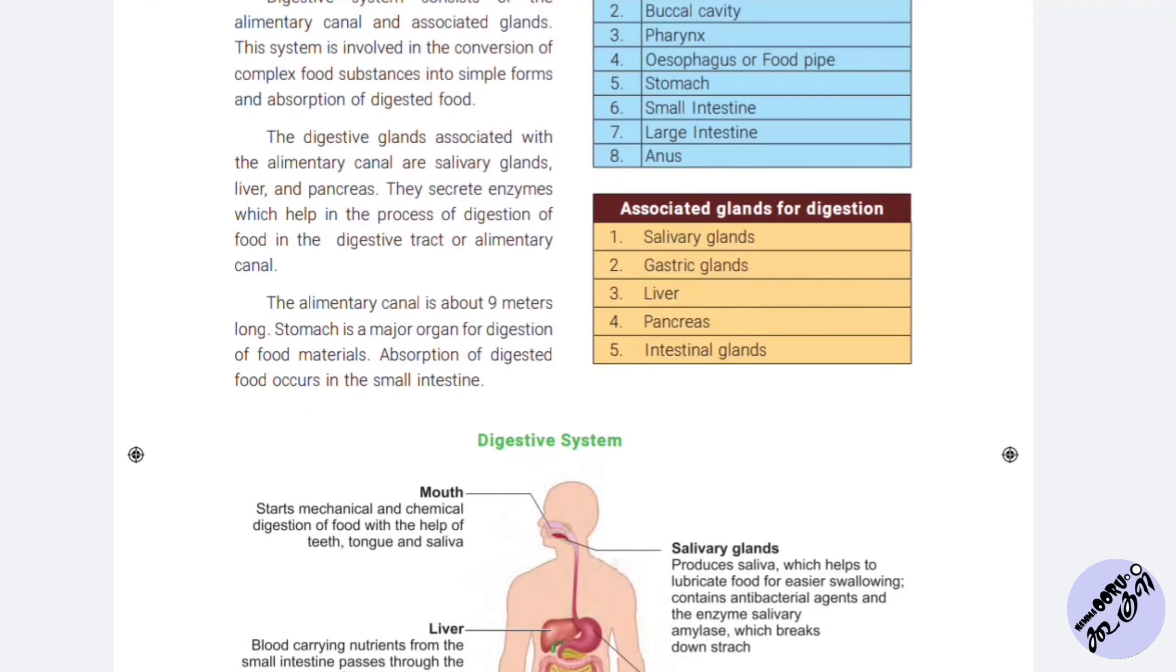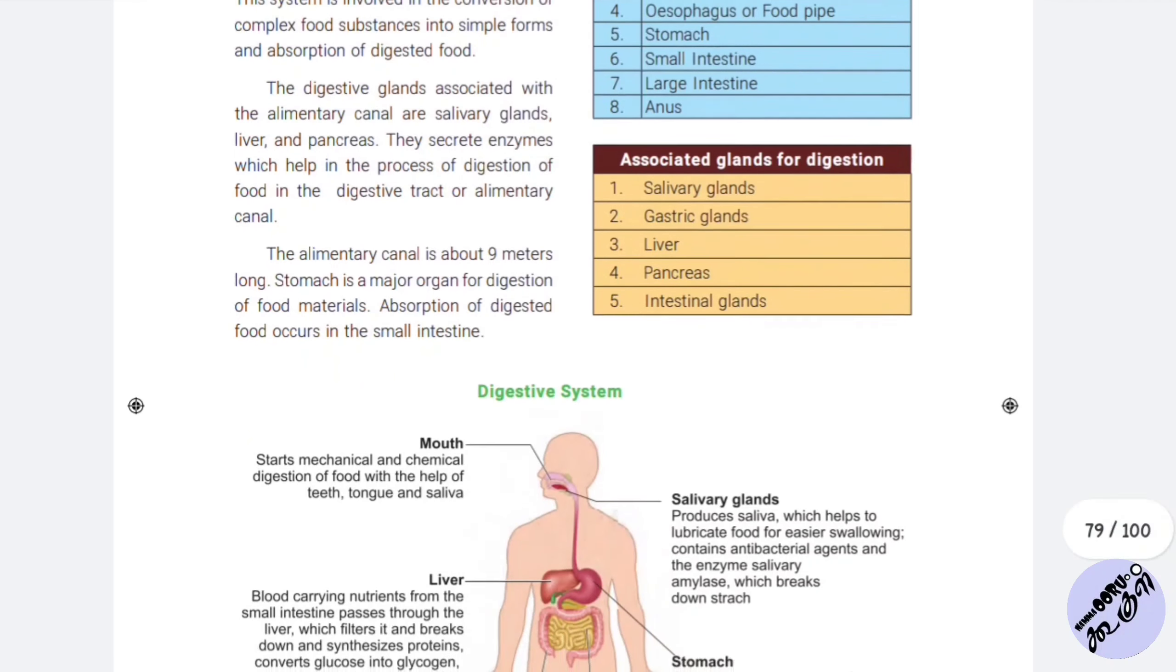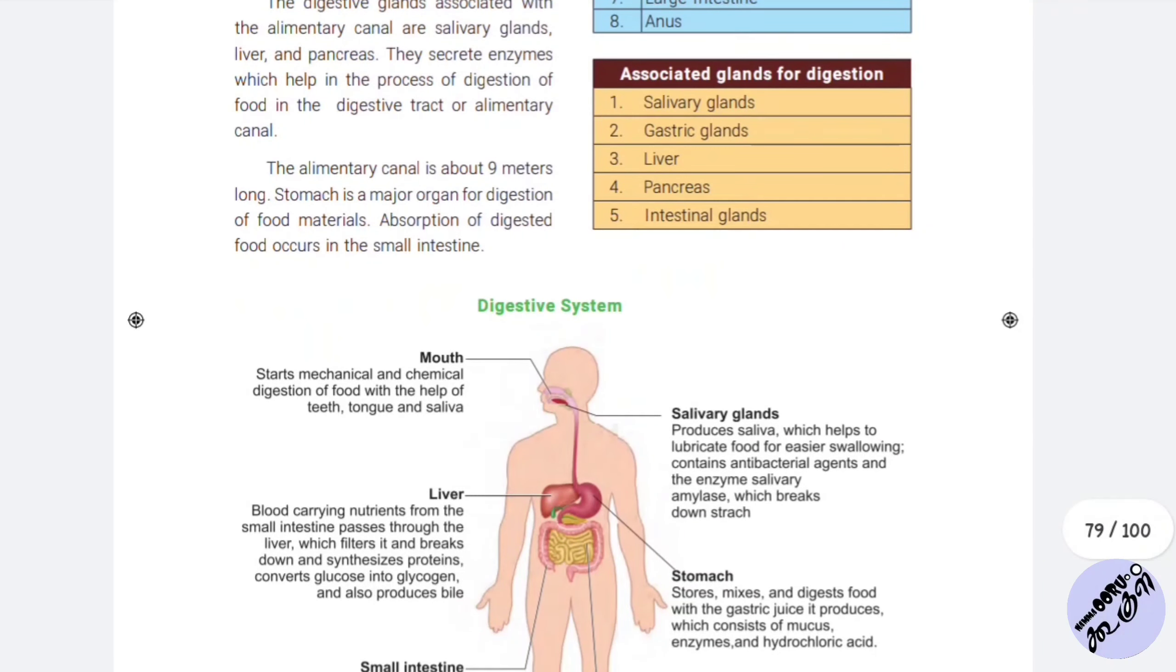They secrete enzymes which help in the process of digestion. The alimentary canal is about 9 meters long. The stomach is a major organ for digestion of food materials.